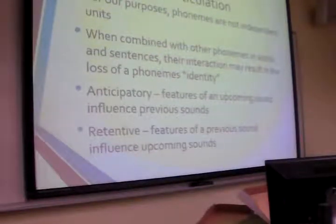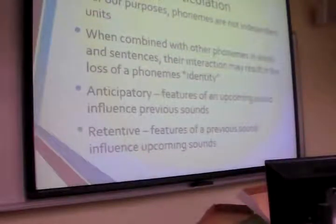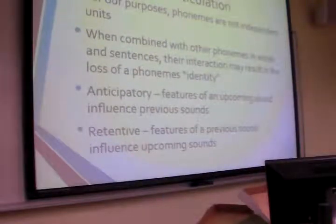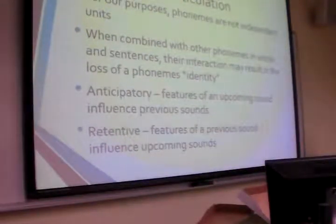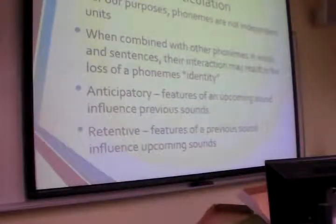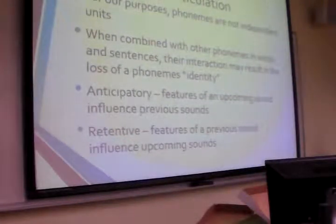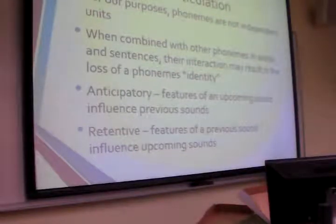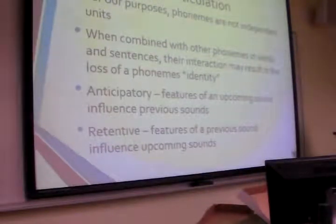As a result of transcribing connected speech, we have many factors that come from co-articulation. Co-articulation is when phonemes in words and sentences influence one another. That changes a phoneme's identity slightly because it borrows features from the sounds before and after it. We have two kinds of co-articulation. The first is anticipatory, which is when a sound before the target sound is influenced by the features of the sound it's about to produce.